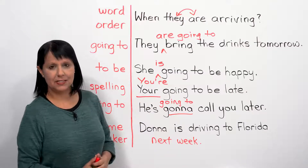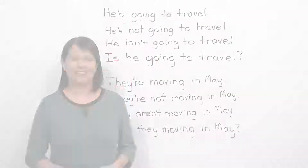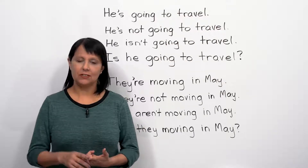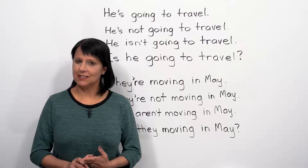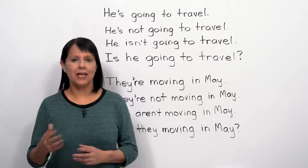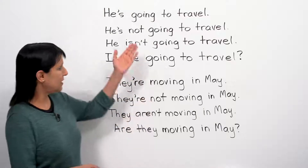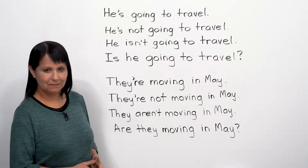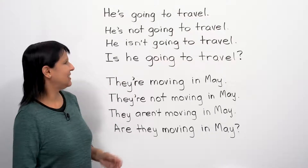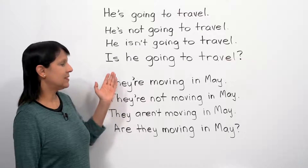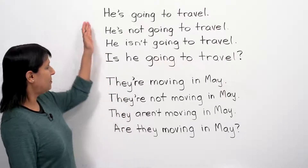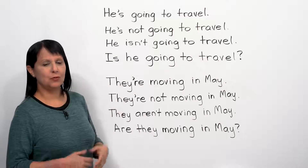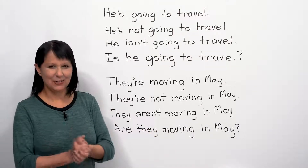Let's finish with a quick review. We learned how to use 'going to' and the present continuous to talk about the future - when and how to use them. You should feel comfortable making sentences like: 'He's going to travel,' 'He's not going to travel,' 'He isn't going to travel,' or 'Is he going to travel?' And adding question words: 'When is he going to travel?' 'Where is he going to travel?'